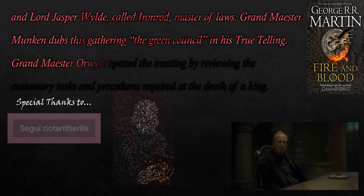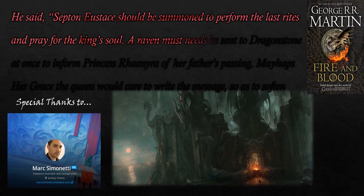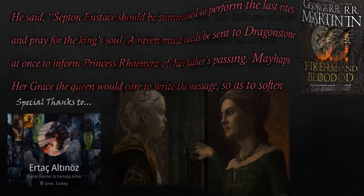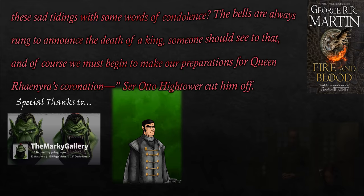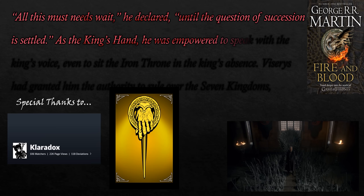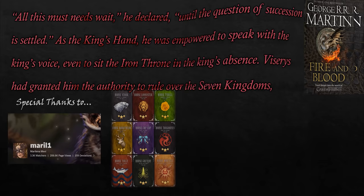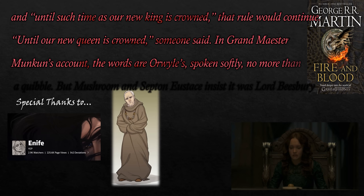Grand Maester Orwyle opened the meeting by reviewing the customary tasks and procedures required at the death of a king. He said: Septon Eustace should be summoned to perform the last rites and pray for the king's soul. A raven must needs be sent to Dragonstone at once to inform Princess Rhaenyra of her father's passing. The bells should be rung to announce the death of a king. And of course, preparations must begin for Queen Rhaenyra's coronation. Ser Otto Hightower cut him off: all this must needs wait, he declared, until the question of succession is settled.